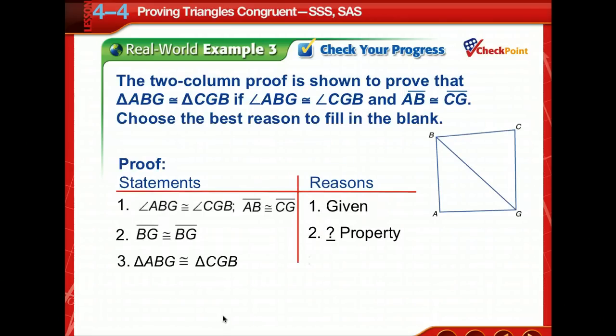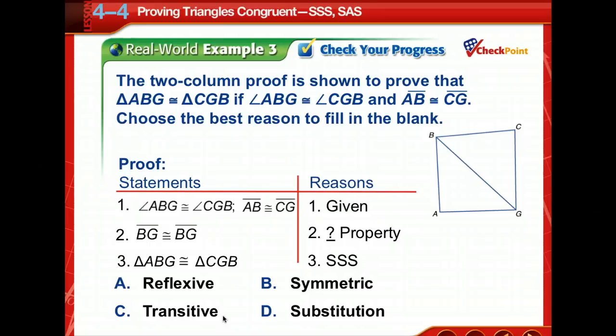Okay, time to check your progress. What is the missing reason? And again, reflexive. So we've got angle ABG is congruent to angle CGB, because we've got some alternate interior angles, right? Okay, ABG, well, no, we're not told they're parallel. Oh, we're given angle ABG is congruent to angle CGB. Okay, so we're given that included angle. We're also told that AB is congruent to CG. So we've got a side, we've got an angle.